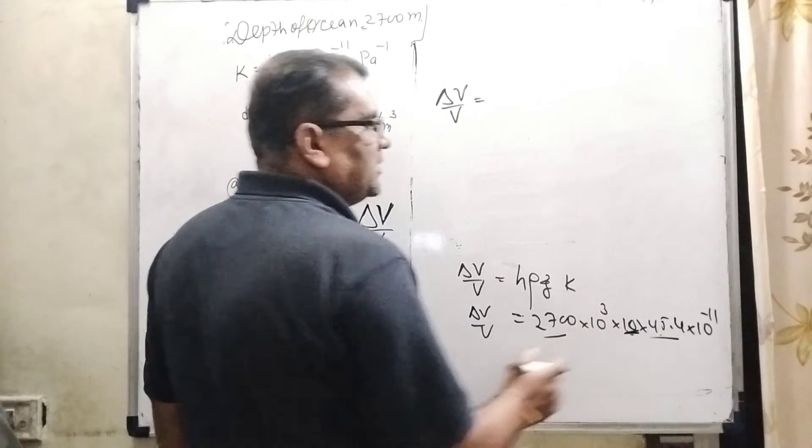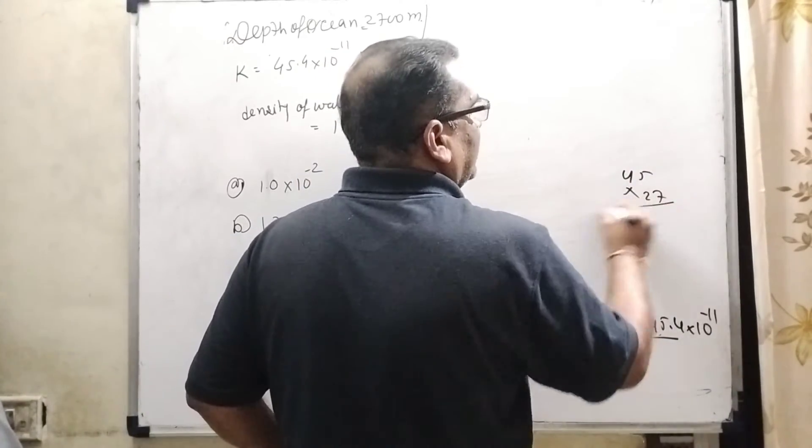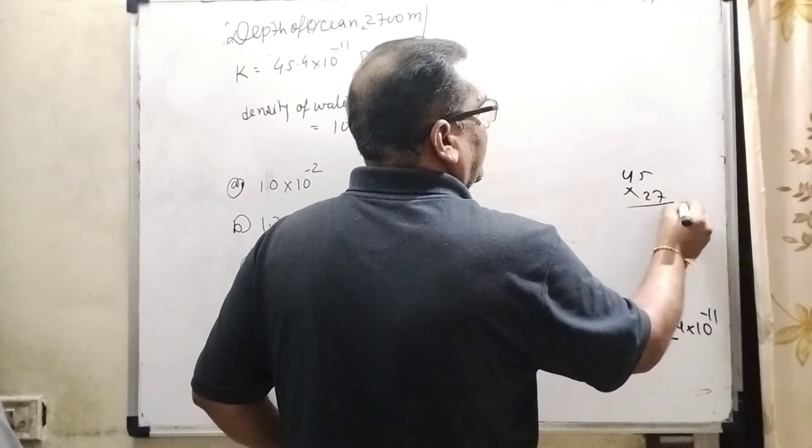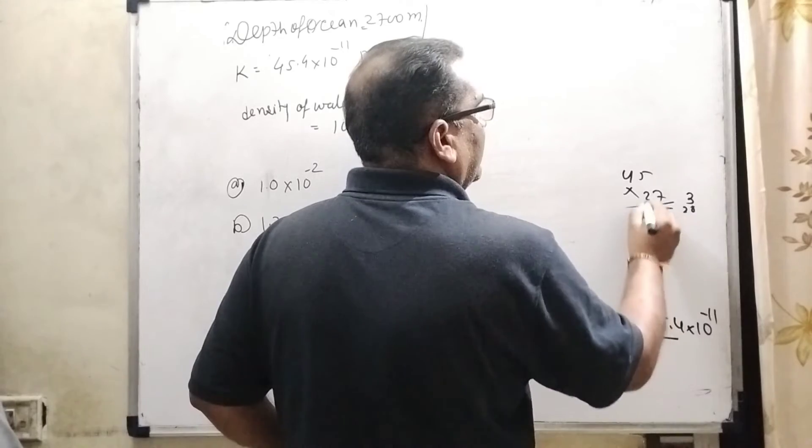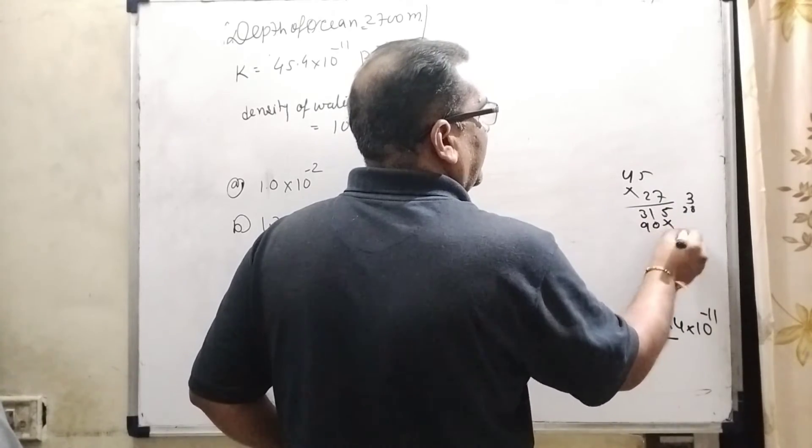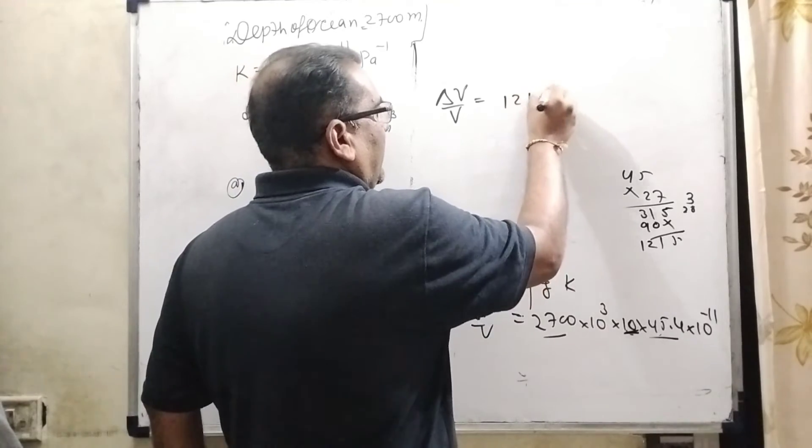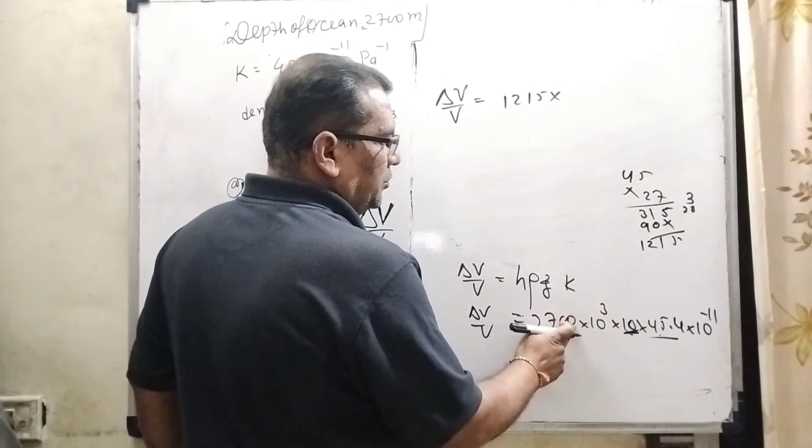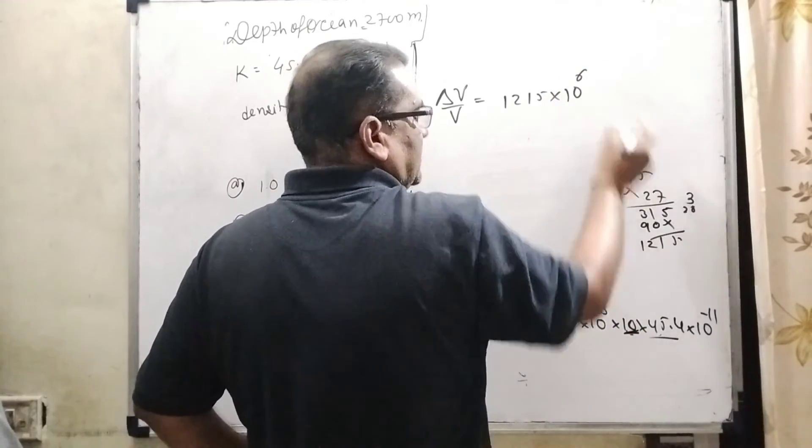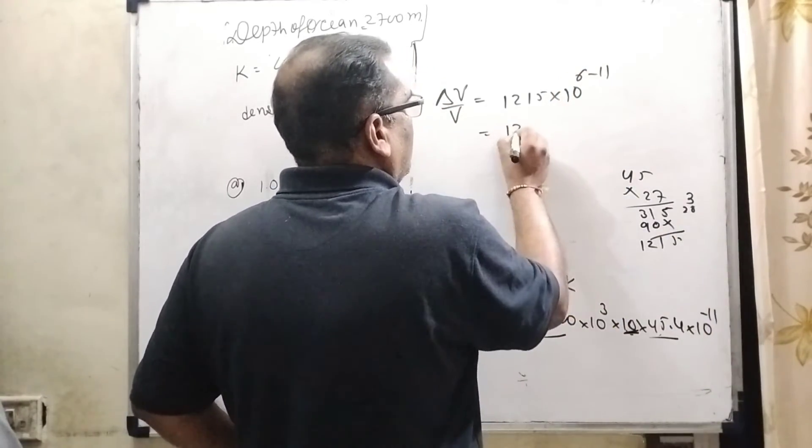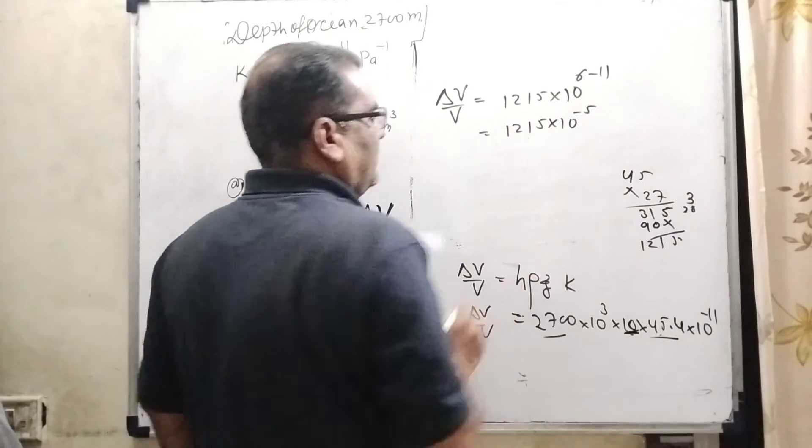So therefore in the place of 45.4, it can be written as 45. Multiply 27. How much? 5 × 7 = 35, 33, 7 plus 28 is 315, and 45 × 2 = 90, that is 1215. And then 1215 × 10^6 and here -11. So 1215 × 10^(6-11) means 10^-5.